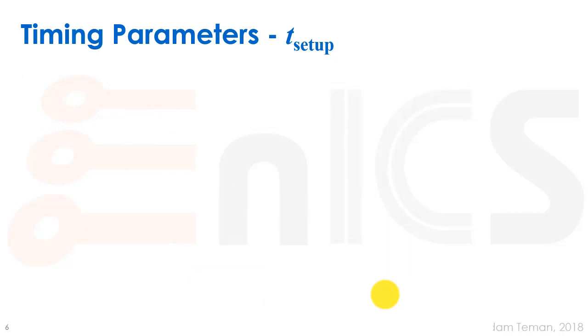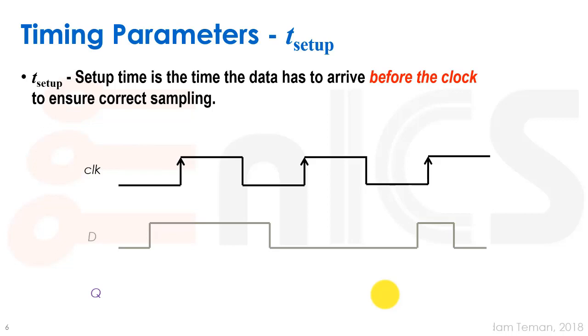Our next timing parameter is the setup time. So tsetup or setup time, sometimes it's called tsu, is the time the data has to arrive before the clock to ensure correct sampling. So we can look at different circuit designs of flip-flops and understand why there is this constraint, but in general we have some sort of a window that is around our clock edge. So if this is a rising clock edge, we call the time before the clock edge that our data has to be stable as tsetup and the time that it has to be stable after the rising clock edge as thold. So now we're talking about tsetup and it's defined in a positive manner in the left looking direction. So the amount of time before the clock edge that the data has to be stable is the tsetup.